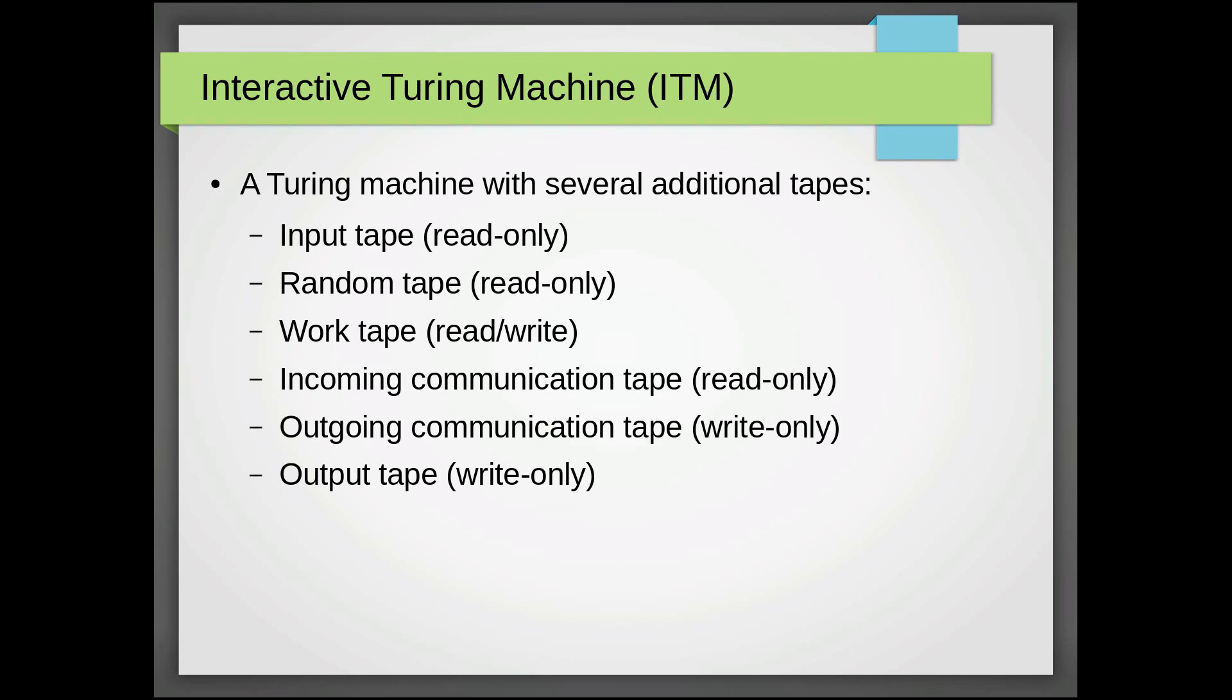This tape contains a random string of bits, each of which was decided by a fair coin toss. So this is just a string of bits and it's read-only. The next tape is a work tape, on which the machine can perform any kind of computation at once, and it can read and write on this tape.